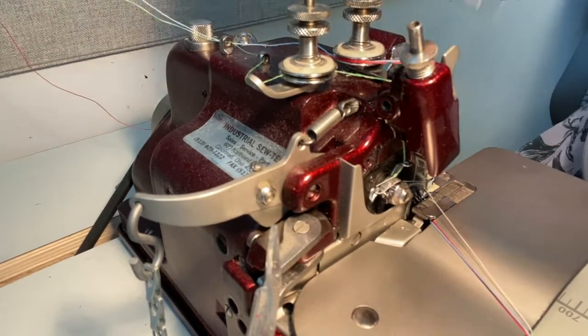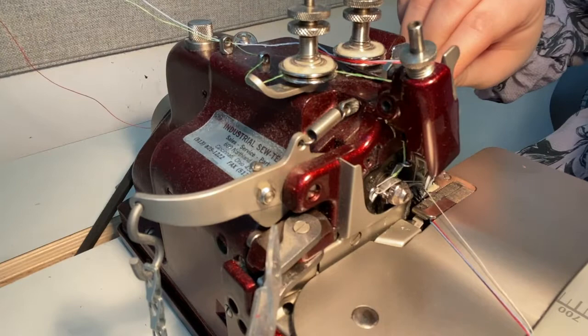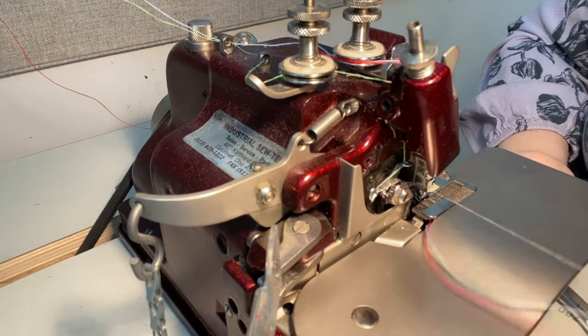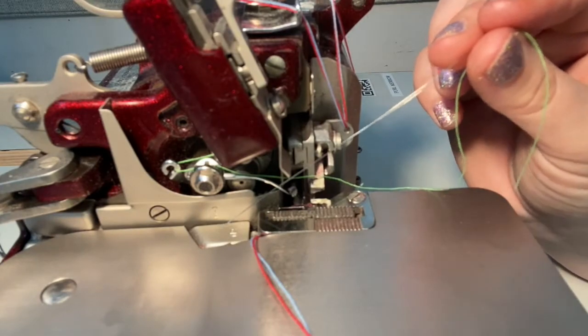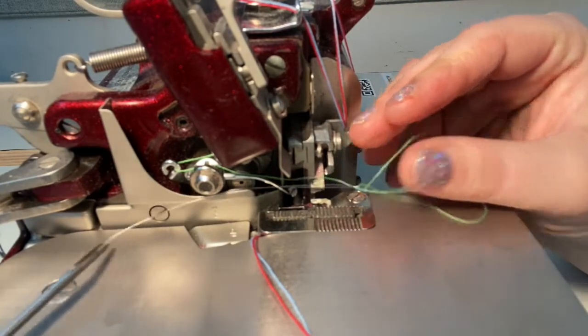Bring the thread forward over the hex nut which secures the needle. In that hex nut there is a small channel where the thread travels through, and then thread the needle from front to back. These needles are slightly trickier to thread as they are curved, so using a thread guide or tweezers may be helpful.